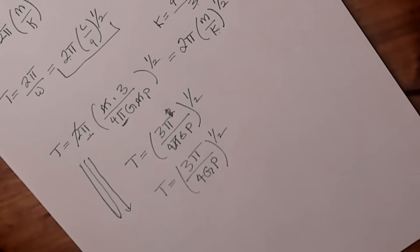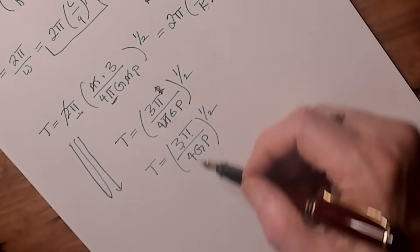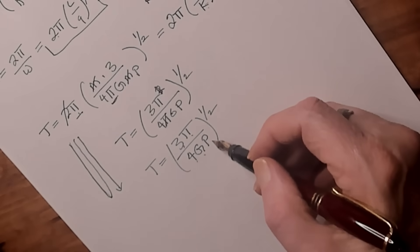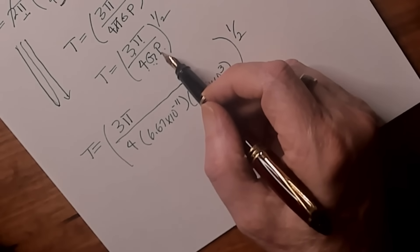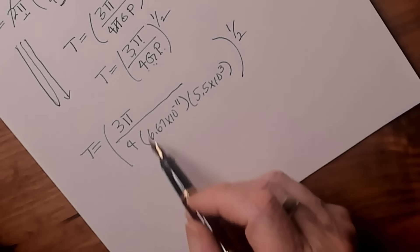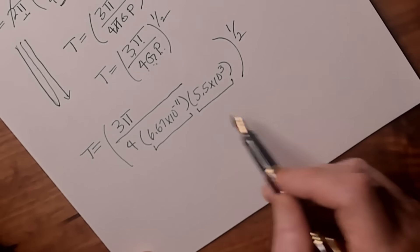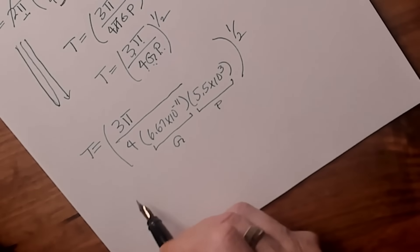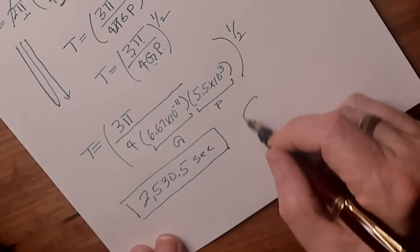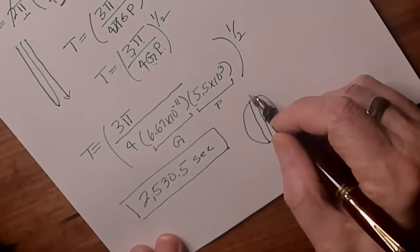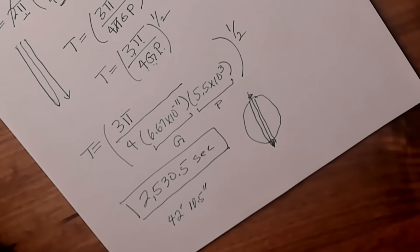The interesting thing is that all of these remaining terms — 3, pi, 4, G, and the density of Earth — are constants, so we can solve for this directly. When we plug in the values of G and rho, we take the square root of 3pi divided by 4 times G times rho. The result comes out in seconds, and that is the time it takes to go through the center of the Earth: 42 minutes, 10 and a half seconds.